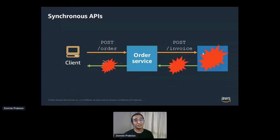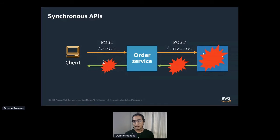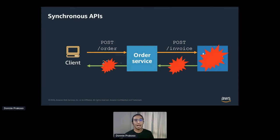But what happens if one of the services has some kind of issue? If the invoice service needs to perform the request and it takes longer than expected, it will return a gateway timeout. The order service will have a problem because it didn't get the proper response from the invoice service. You might think we need to build a retry mechanism and circuit breaker — those are useful patterns. But the underlying problem isn't just how you handle the error; it's how to minimize the error in service communication.